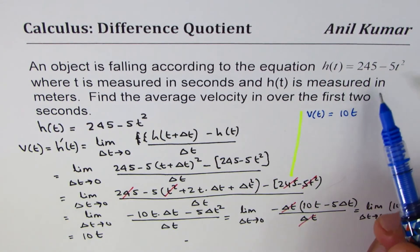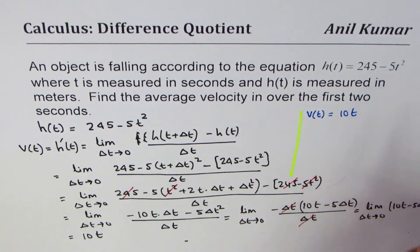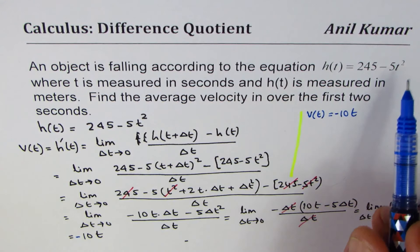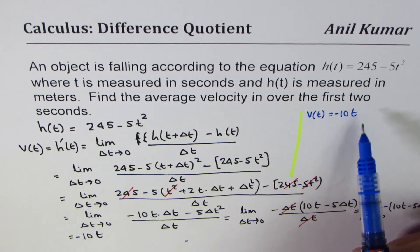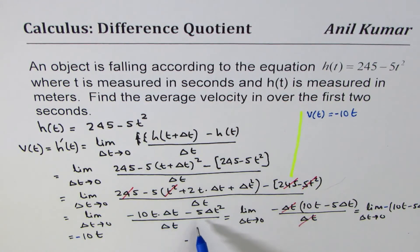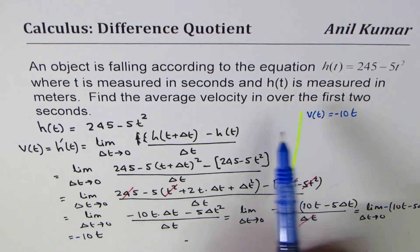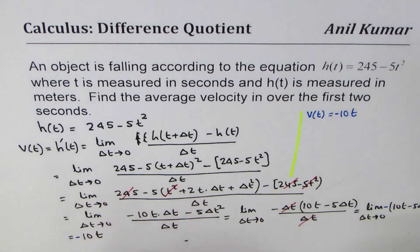Those of you who know power rule, they can straight away—I'm getting minuses there, sorry. I forgot to write this minus sign, so let me take this minus sign here. So it is -10t. So those of you who know power rule, they can multiply 2 by -5, get -10t straight. They really don't have to do all this. But I hope this exercise for those who have just started with calculus and they've just learned difference quotient method.